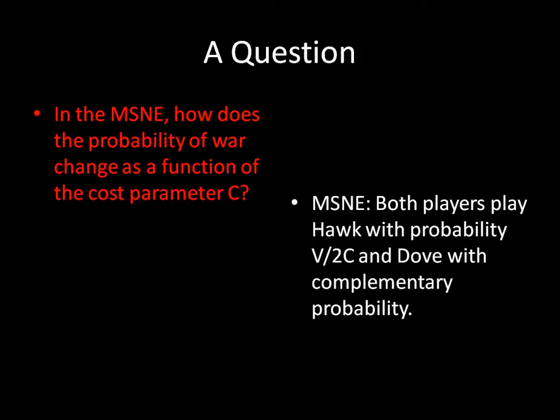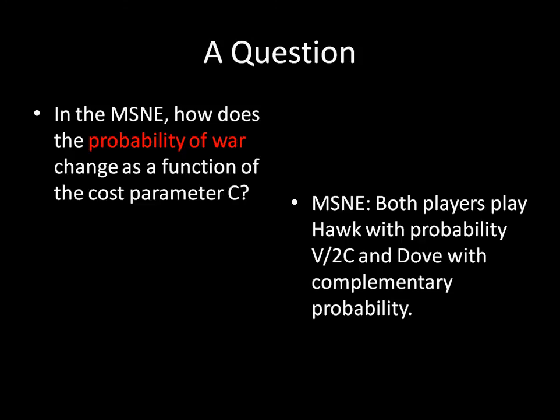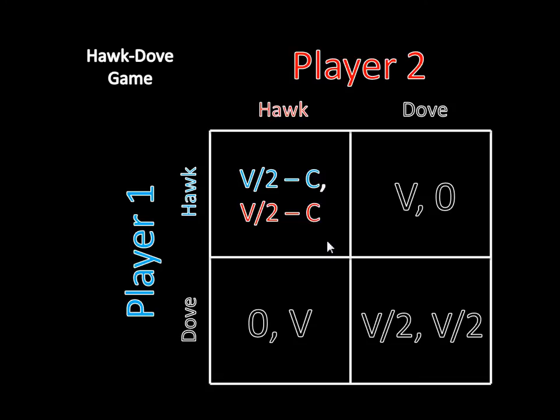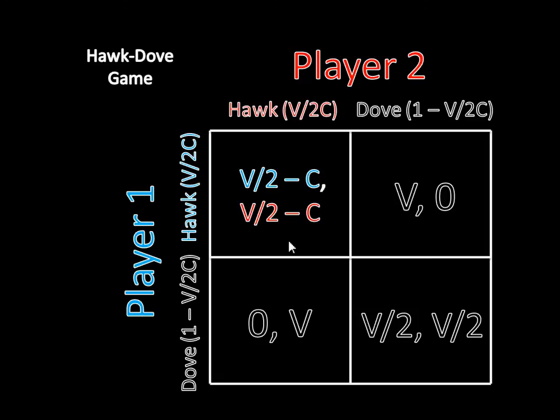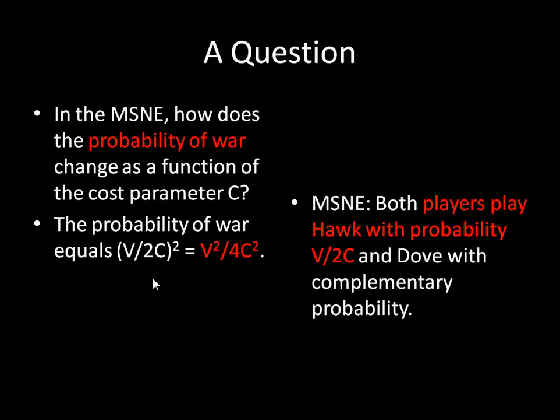Our element of interest is the probability of war. The probability of war is the probability that we end up in the Hawk-Hawk box, where both players are playing Hawk — that's where the fighting occurs and costs are incurred. Since both players play Hawk with probability V over 2C in the mixed strategy Nash equilibrium, the probability of reaching this outcome is V/2C times V/2C, which equals V squared over 4C squared. That is our element of interest — the probability of war. Step two is done.